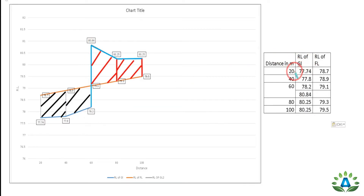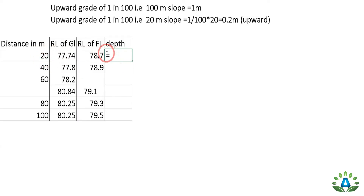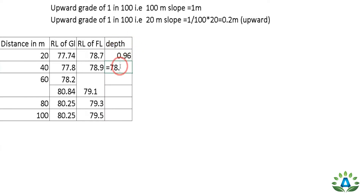To calculate depth, we use: RL of formation level minus RL of ground level. If the result is positive, it is a fill (banking) section; if negative, it is a cut section. At 20-meter chainage: formation level 78.7 minus ground level 77.74 = +0.96 meters (fill). At 40-meter chainage: 78.9 minus 77.8 = +1.1 meters (fill).